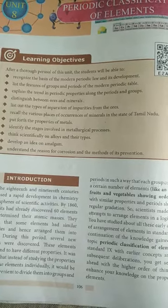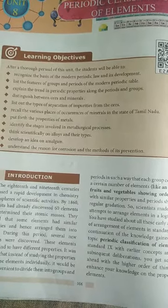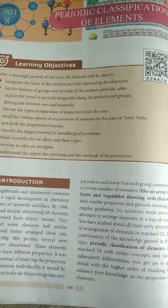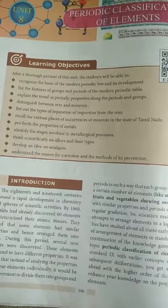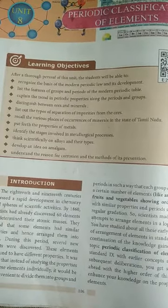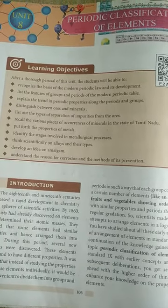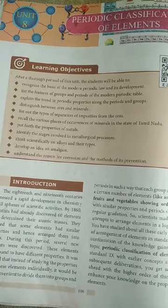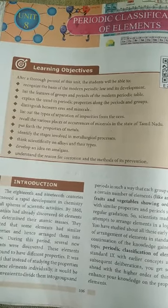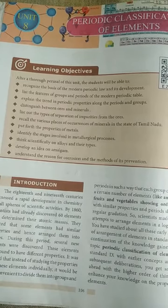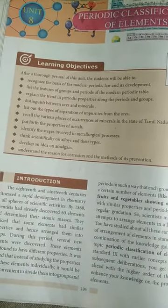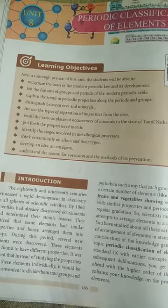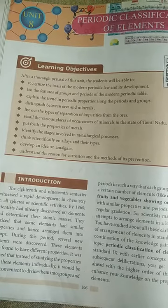Good morning students. Today we are going to see unit 8: periodic classification of elements, for 10th standard science. We already studied the basic introduction in 9th standard — how elements are arranged in the periodic table. We know there are 118 elements: metals, non-metals, and semi-metals. Here we look at how they are arranged based on physical and chemical properties.